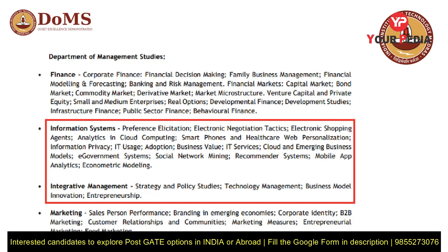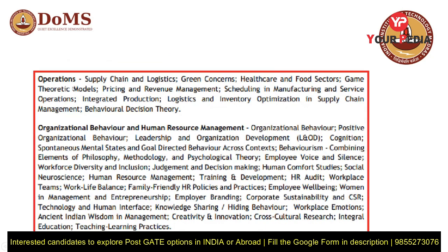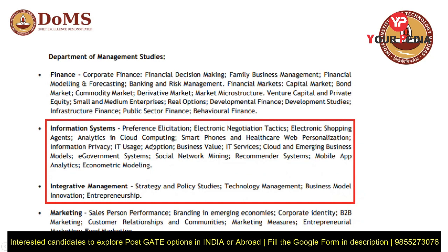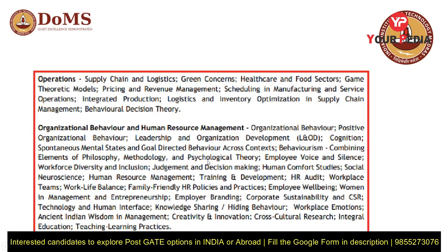Operations covers supply chain, logistics, manufacturing, services, production, and inventory — typically the mechanical engineering domain. Mechanical and civil engineers can go for Operations. Organizational Behavior and Human Resource Management is typically suited for civil engineers, who have dealt with labor relations. In summary: civil engineers for OB/HRM, mechanical for Operations, CS for Information Systems, and Integrative Management is generic for anyone. When you choose your topic, be very sure — you will face an interview and need to explain why you are interested.